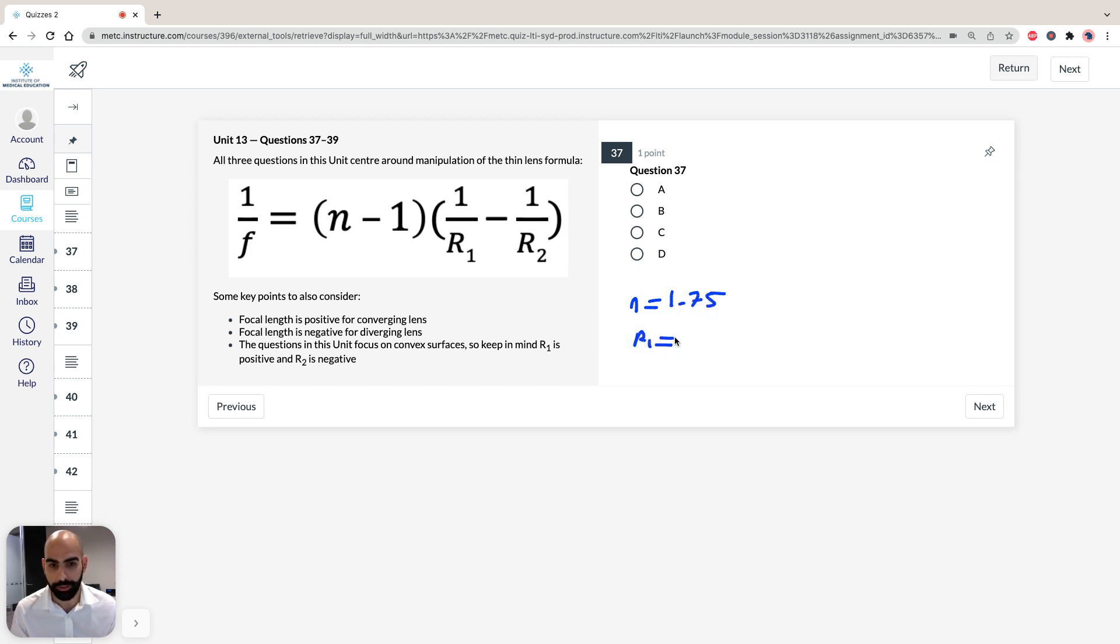But we know that our n is going to be 1.75. Our R1 is going to be plus, because remember it says R1 is positive, so R1 is going to be 60. And because it says it's both sides 60 centimeters, R2 is going to be negative 60. So keep that in mind because it's a convex surface. So now let's just plug and chug, put it into the equation.